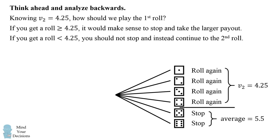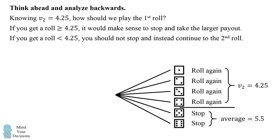So now we can calculate the average value from before the first roll. We'll either roll a 5 or 6 and stop and get that expected payout, or we'll roll 1, 2, 3, or 4, and then we'll decide to roll again and get the average payout before the second roll. So we can substitute in those values.